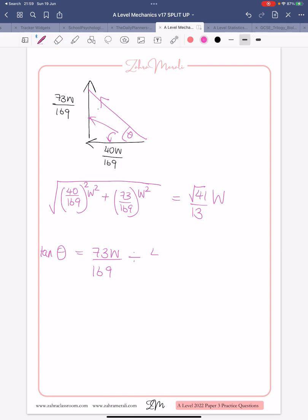Now, a divide becomes a times, and you flip the fraction, so that's going to cancel, that's going to cancel. So, we get tan theta equals 73 over 40. We're going to do inverse tan, and theta equals 61 degrees.